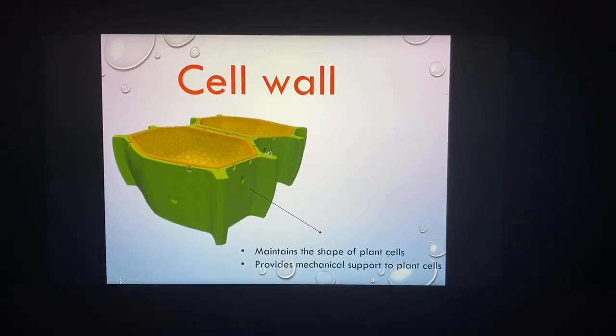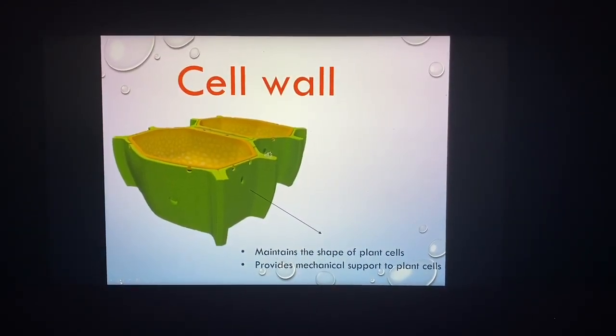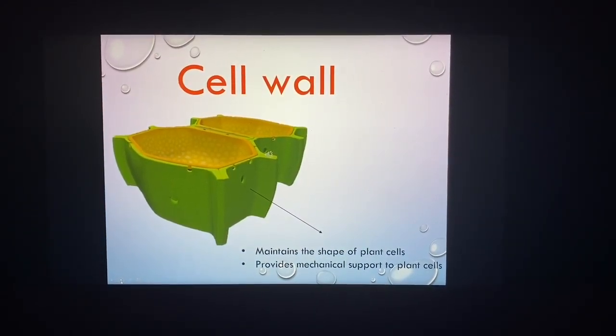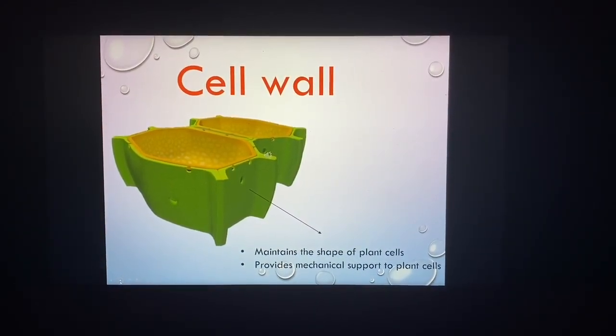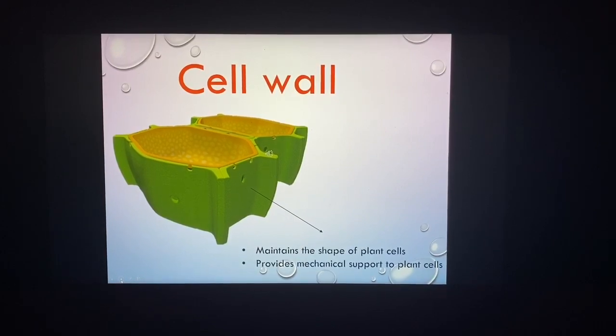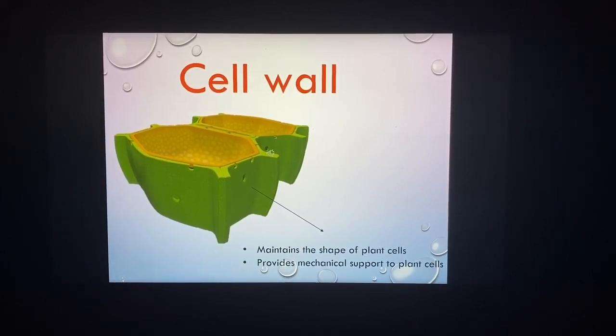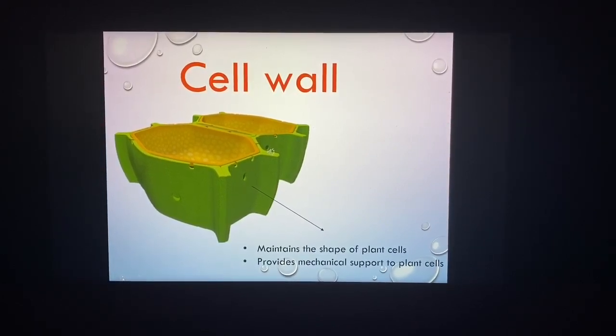Let's start with the cell wall. The function of the cell wall is to maintain the shape of the plant cell and provide mechanical support to the plant cell.